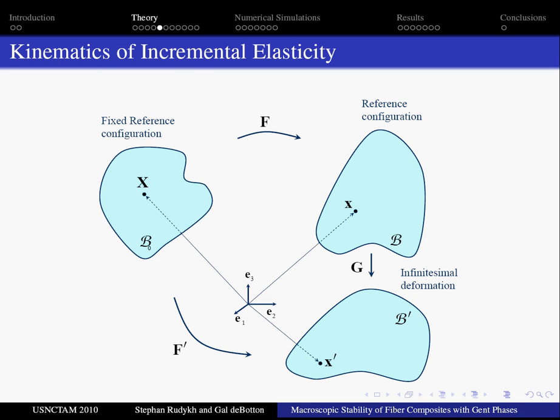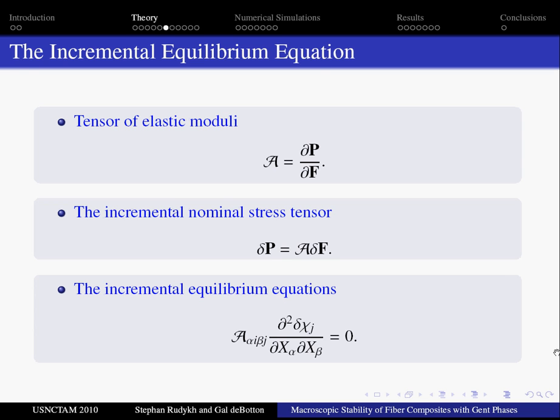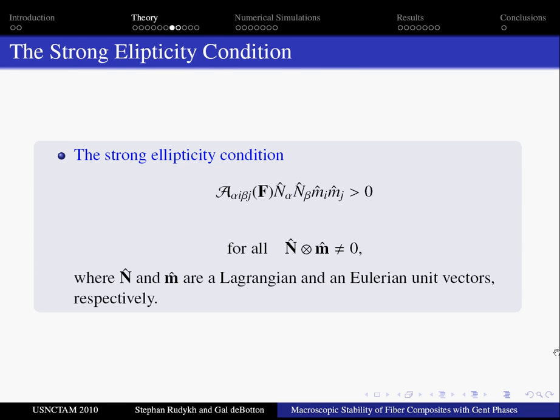After the deformation is performed, we ask a question: if there exist two or more equilibrium configurations in the vicinity of a deformed state. To answer the question, we introduce the tensor of elastic moduli A, then the incremental nominal stress tensor is defined, and next the incremental equilibrium equations are written in the following form, which leads us to the definition of the strong ellipticity condition, where n and m are unit vectors in reference and current configurations, respectively.